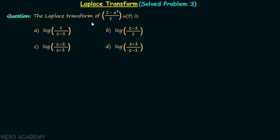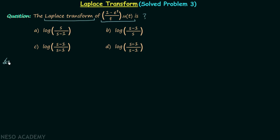The Laplace transform of a time domain signal (1 minus e^t) divided by t, multiplied by u(t), is what we need to find. We are required to calculate its corresponding bilateral Laplace transform. There are 4 options and we need to choose the correct one. Let's see how we can solve this question.